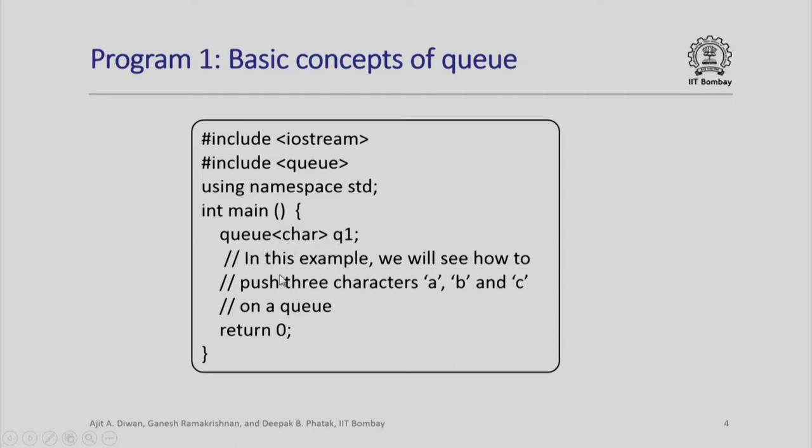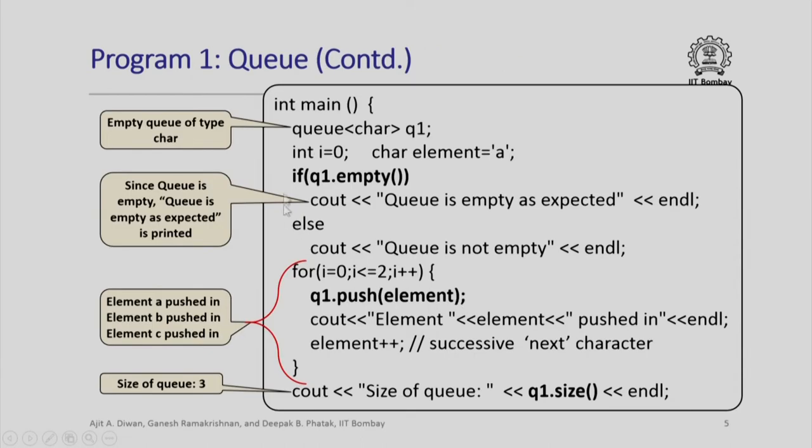We will just try and push three arbitrary characters a, b and c on a queue. This is the main program. I declare queue as queue 1. I initialize an index variable i and the char element initially is a.